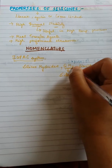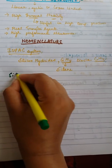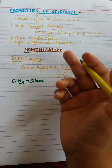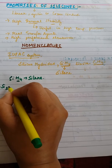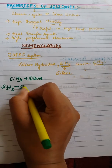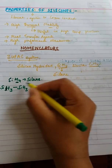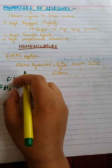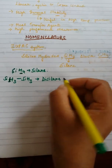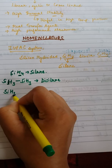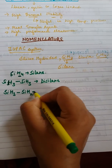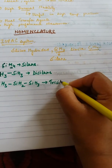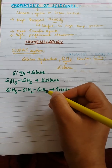So SiH4 is named as silane. Whenever we replace any of the hydrogens, the name changes. For example, if two silicon subunits are attached, that means 'di' plus silane as its backbone — so it is known as disilane. If three silicon subunits are joined, its name will be trisilane — tri meaning three, silane being the backbone.